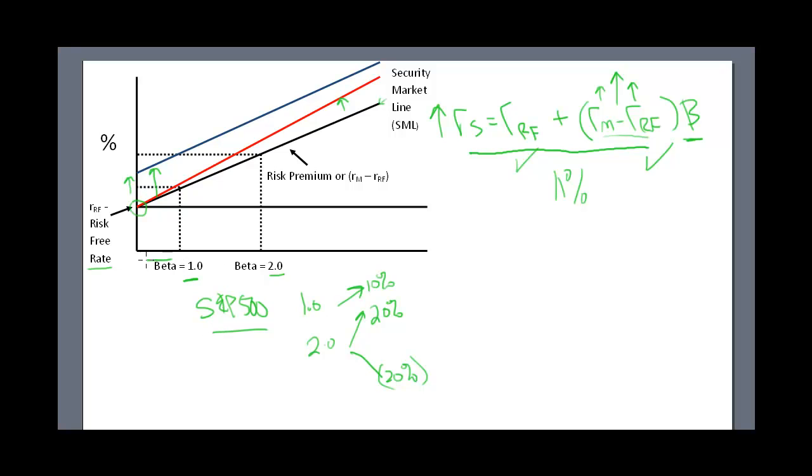Anything less than one would be less risky. So if I have a beta of 0.5, if the S&P goes up by 10%, my stock only goes up by 5%. And in essence, I only lose 5% when the S&P goes down by 10%. So it's less risky when you have a beta of less than one.